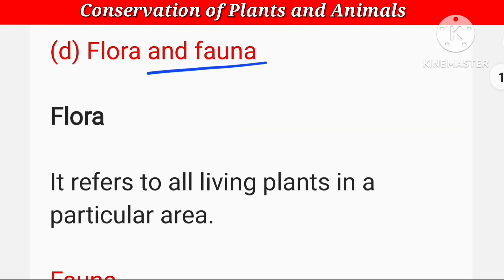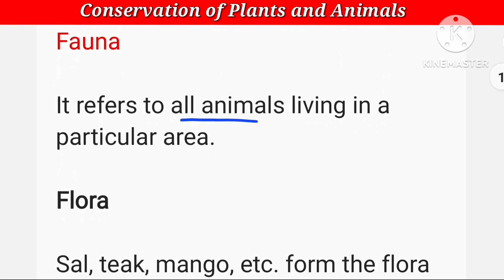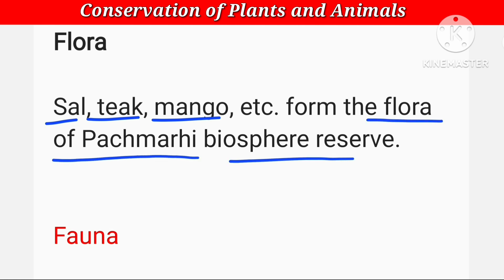अब flora और fauna का फर्क बताना है। Flora — it refers to all living plants in a particular area — यानि किसी particular area में जितने भी प्रकार के plants हैं, उनके लिए यह word use होता है। Fauna — it refers to all animals living in a particular area — जो किसी area में रहने वाले सभी animals हैं। Sal, teak, mango, etc. form the flora of Pachmarhi Biosphere Reserve।